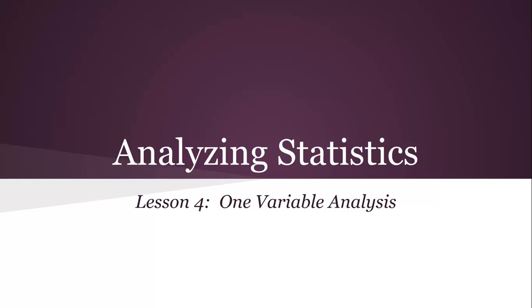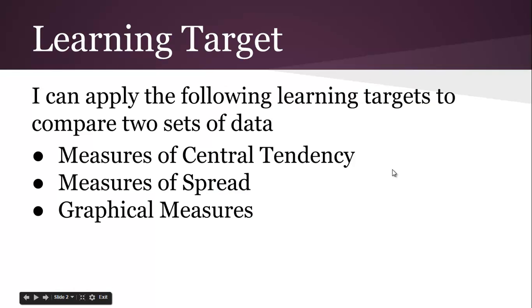What you're going to be required to do, both in your culminating assignment and on the test, is just take a data set and compare it. Compare all the one-variable stats: measures of central tendency, measures of spread, and then the distributions from the box and whisker plot and the histograms. We're going to walk through that right now.